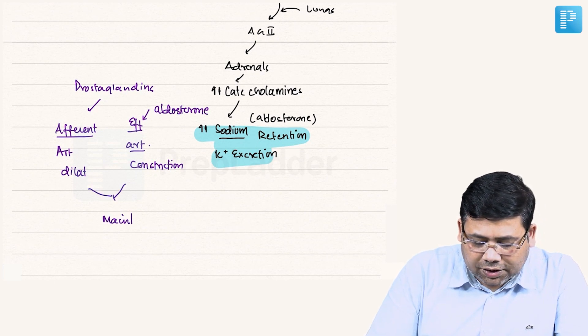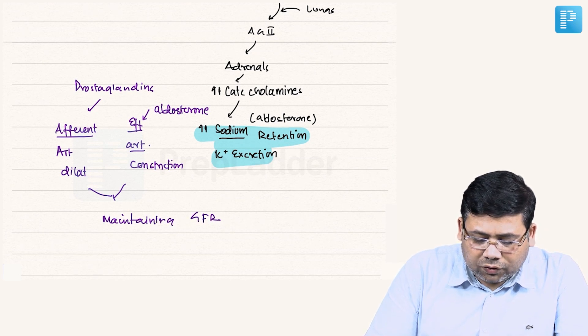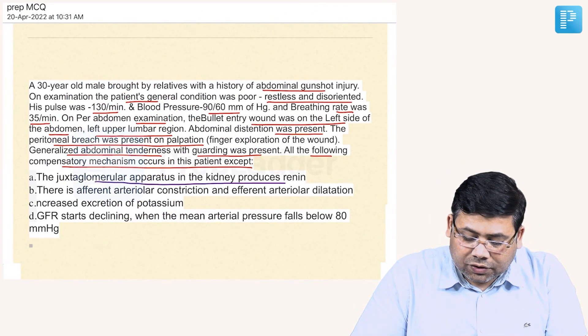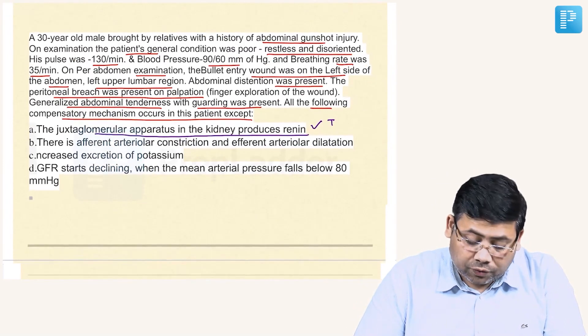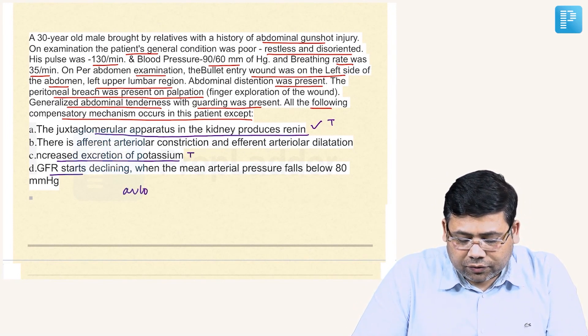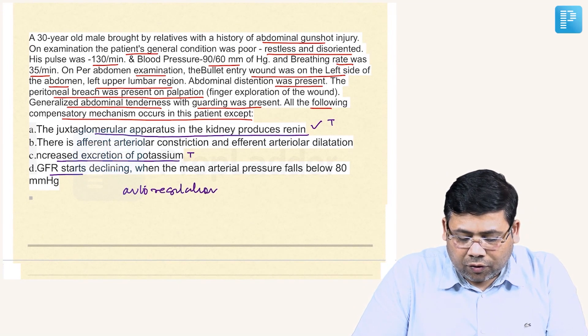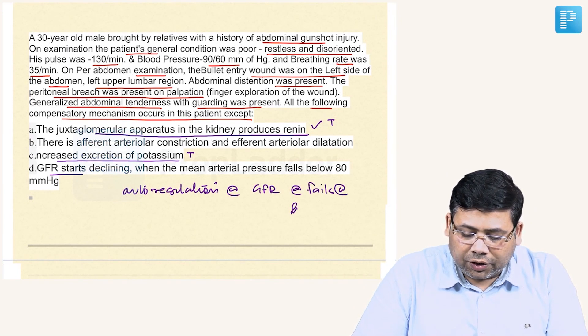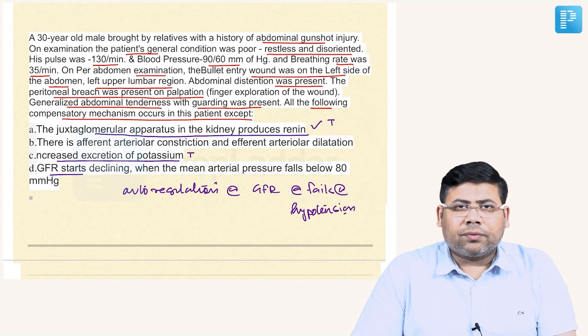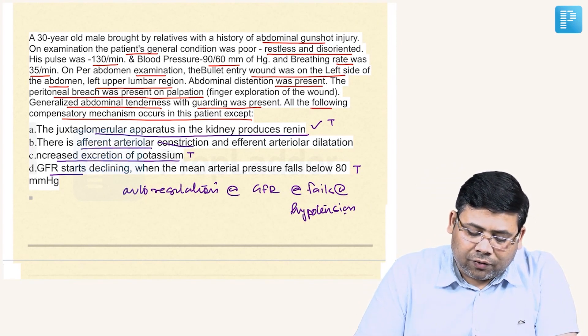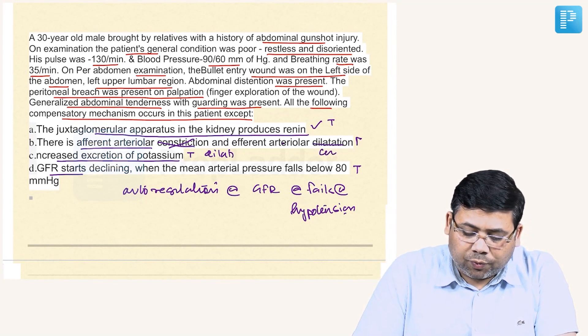Now if we go to the question, let us see the important points. The juxtaglomerular apparatus of the kidney produces renin - this is absolutely true. There is increased excretion of potassium - absolutely true. The auto-regulation of GFR fails when there is hypotension, and that cutoff is basically at 80 mmHg - this is also true. There is afferent arteriole dilation and efferent arteriole constriction - so this point is absolutely wrong.